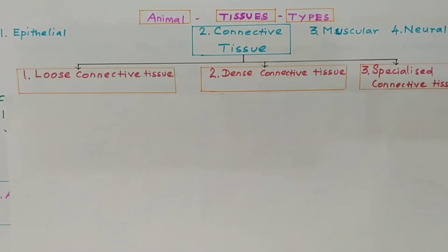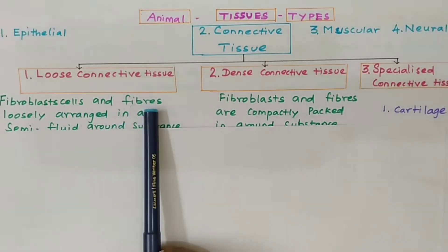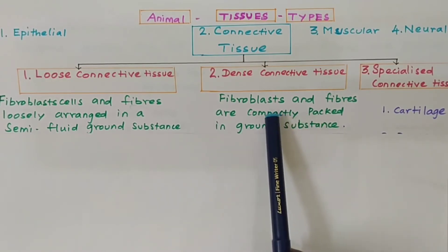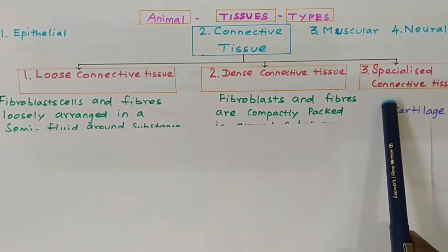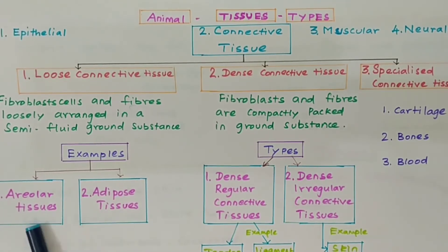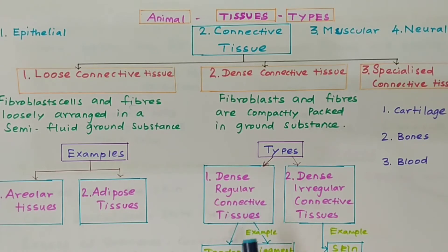Specialized connective tissue examples we have already discussed. The difference between loose and dense connective tissues: in loose connective tissue, fibroblast and fibers are loosely arranged in the semi-fluid ground substance; in dense connective tissue, the fibroblast and fibers are compactly packed. The specialized connective tissues are cartilage, bone, and blood. Examples of loose connective tissue are areolar tissue and adipose tissue. There are two types of dense connective tissue: dense regular and dense irregular — based on the arrangement of fibroblast and fibers. Examples of dense regular connective tissue: tendon and ligament. Example of dense irregular connective tissue: skin.